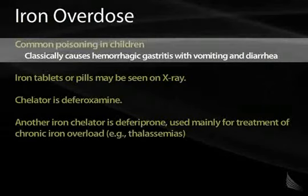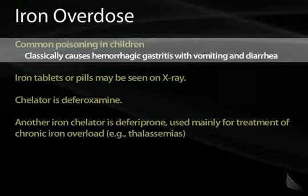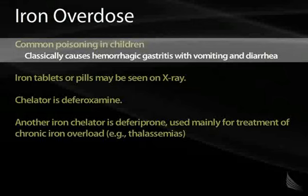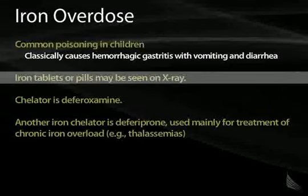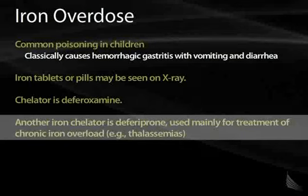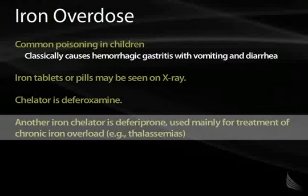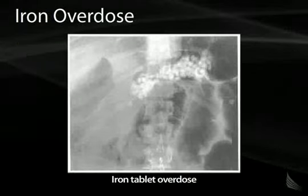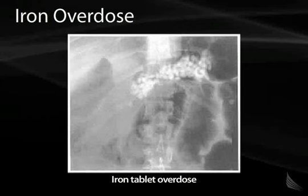Iron overdose is a common poisoning in children, classically presenting when a child eats too many iron pills or Flintstones vitamins. These patients typically develop GI bleed, hemorrhagic gastritis with vomiting and bloody diarrhea. An x-ray may show the pills in the stomach. The common chelator used is deferoxamine, which binds iron and brings it out of the system. A newer chelator is deferiprone (Exjade), which is more expensive but works better and can be used for chronic iron overload in patients with thalassemias.